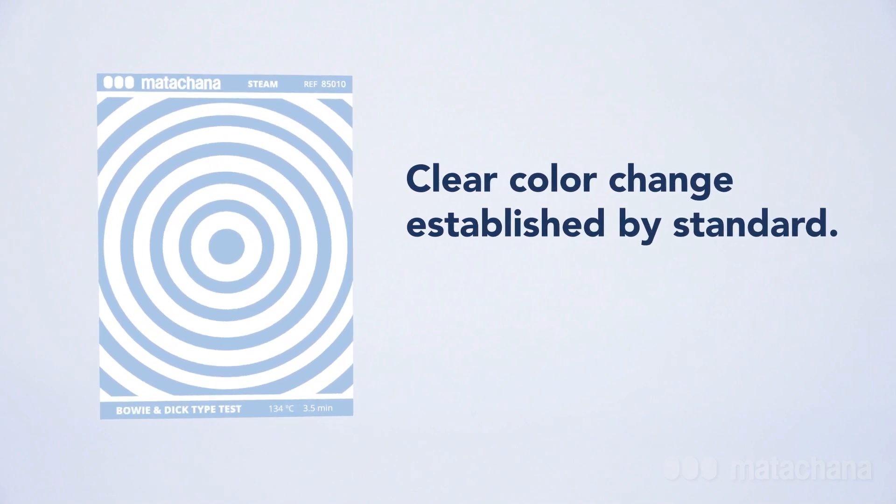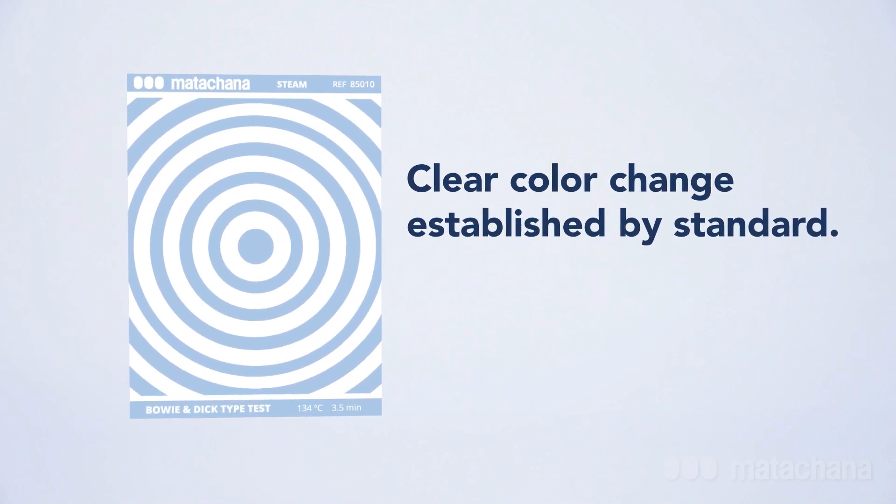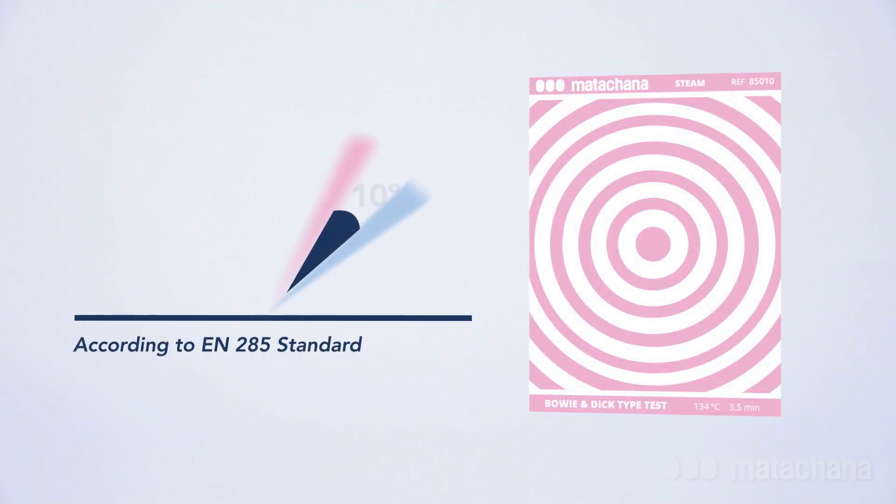The Bowie-Dick pack for the healthcare area contains a color-changing sheet inside. Prior to the sterilization process it is blue. If the operating conditions of the Bowie-Dick program are adequate according to EN285, its color changes to pink.